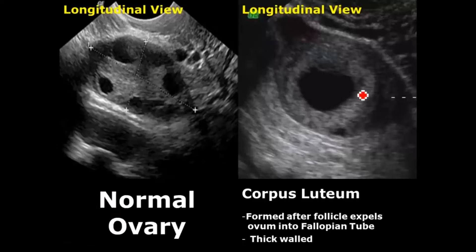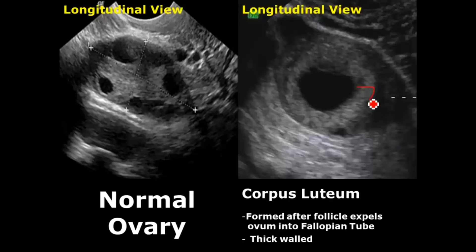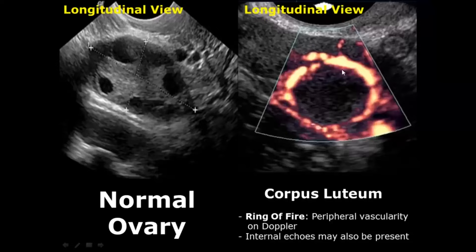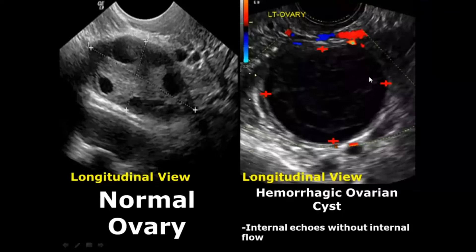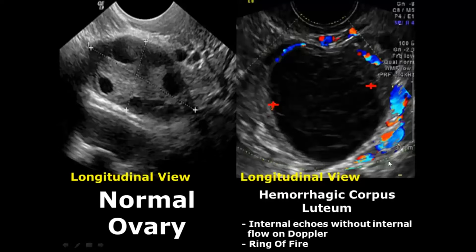Corpus luteum is formed after the ovum is expelled into the fallopian tube — it is a thick-walled structure. On Doppler, we observe peripheral vascularity called the ring of fire, and there can also be internal echoes inside the corpus luteum. A hemorrhagic ovarian cyst can occur from rupture of a corpus luteum or any other functional cyst — it has internal echoes due to blood products and absence of flow on Doppler.